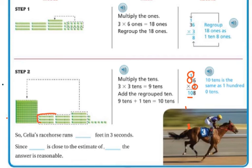So you can see here where they regrouped it and they put it over here. So Cecilia's racehorse runs 108 feet in 3 seconds. Since 108 is close to our estimate of 120, we know that the amount is reasonable.